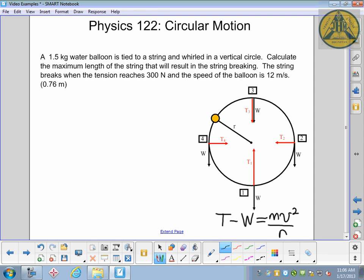So R is the only thing we don't know. Everything else is given to us in the problem. I'm just going to put it in there. So the tension, when it breaks, is 300. The weight is mg, 1.5 times 9.81. And that is going to equal the mass, 1.5 kilogram water balloon, speed squared, 12 squared, over R. I'll simplify this and write it out.